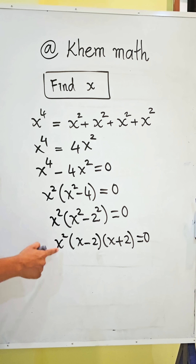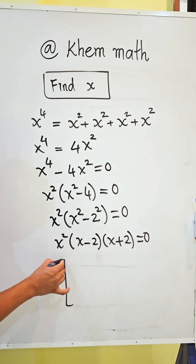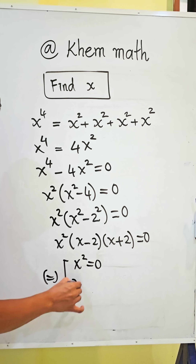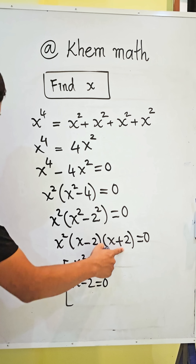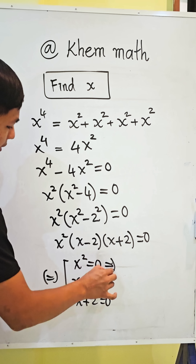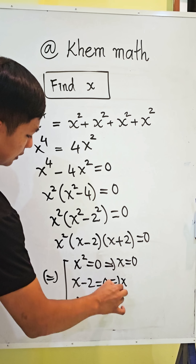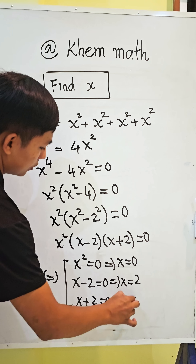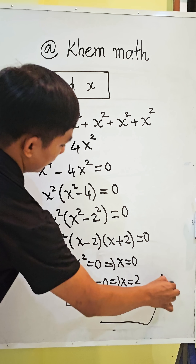So we have three factors equal to 0: x square equals 0, x minus 2 equals 0, and x plus 2 equals 0. This gives us x equals 0, x equals 2, and x equals negative 2 as our answers.